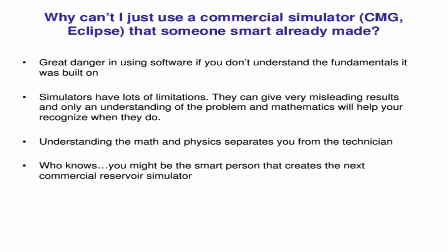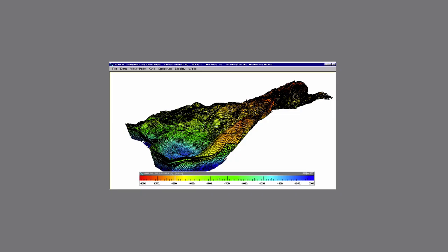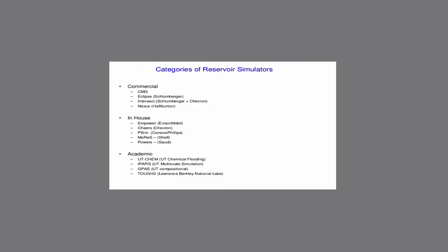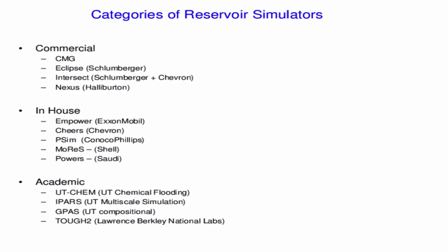There's just a picture of a reservoir from CMG. We talked earlier about naming some simulators, and here's a list. CMG and Eclipse are by far the two most common, but there are many others including several developed right here at UT: UTChem has been developed for about 30 years here, IPARS is from Mary Wheeler's lab, GPRS is from Kamy Sepehrnoori's lab, and TOUGH2 is an open-source code from Lawrence Berkeley National Lab.